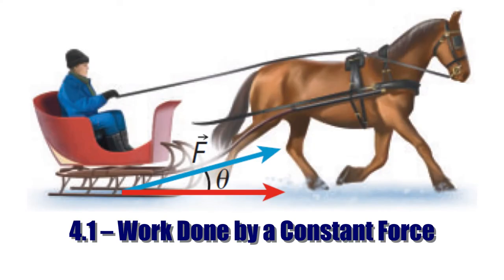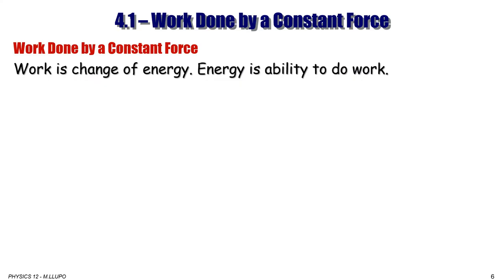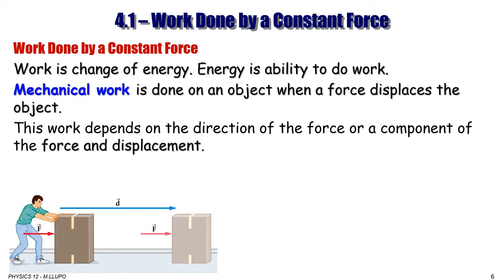Section 4.1: Work done by a constant force. This section focuses on work and is basically a review from Grade 11. There is a close relation between work and energy. The definition of work is a change of energy, and energy is the ability to do work. Mechanical work is done on an object when a force displaces that object. So if there is no displacement, the work is zero — it's about force and displacement.